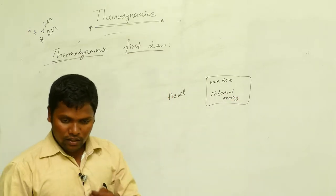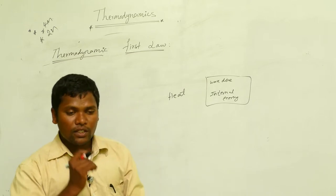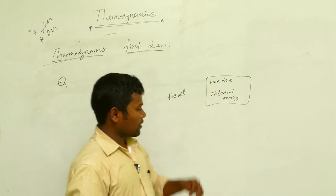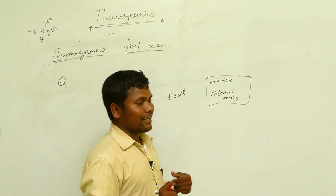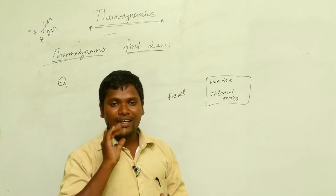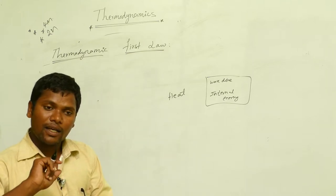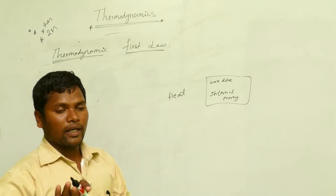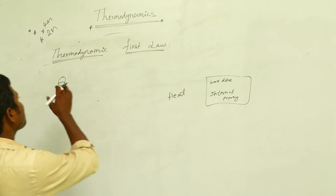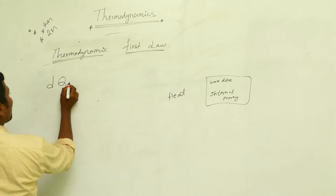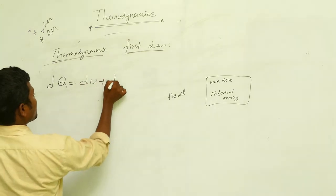If you are giving some energy to one system, some energy is being utilized by work done, and some energy is being utilized by internal energy. Then what we can define as the first law of thermodynamics? The sum of the internal energy and the work done by the system. What we can write? DQ is equal to DU plus DW.